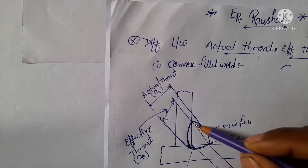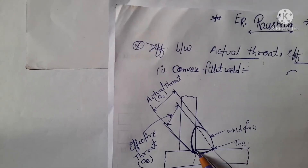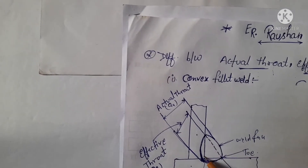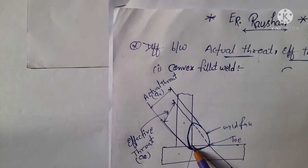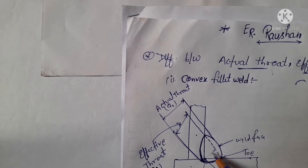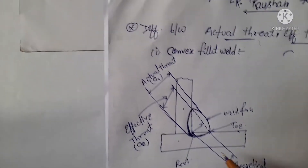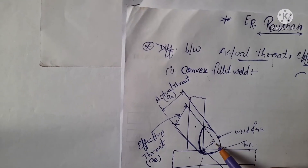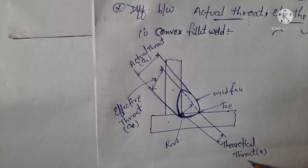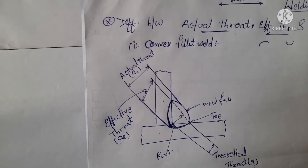This is a dotted line, which is theoretically drawn in the welding. These are two plates — T1 and T2. These two plates meet here, and the distance from the root to this imaginary line is known as the theoretical throat.